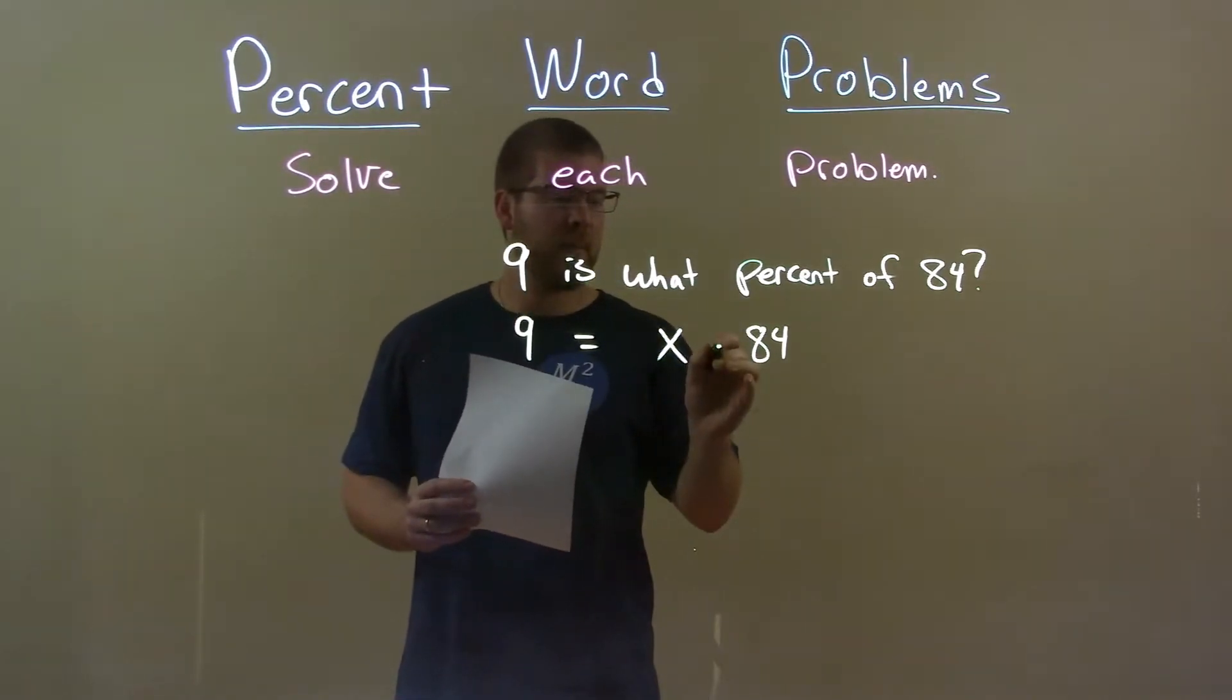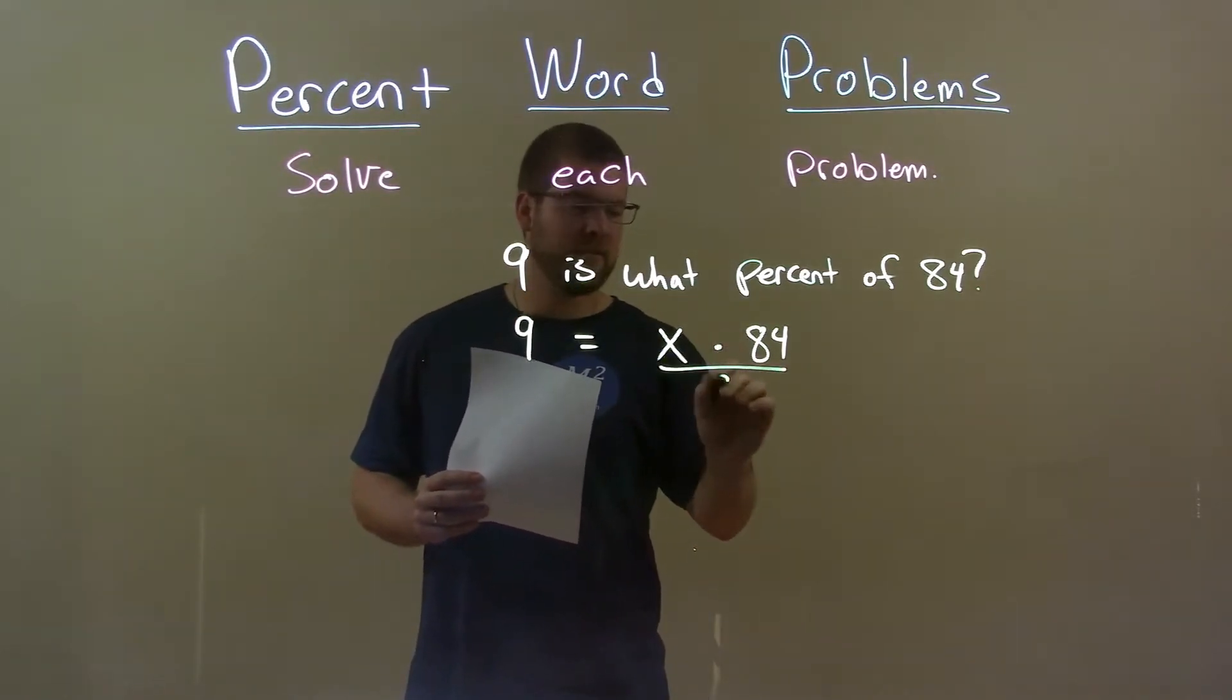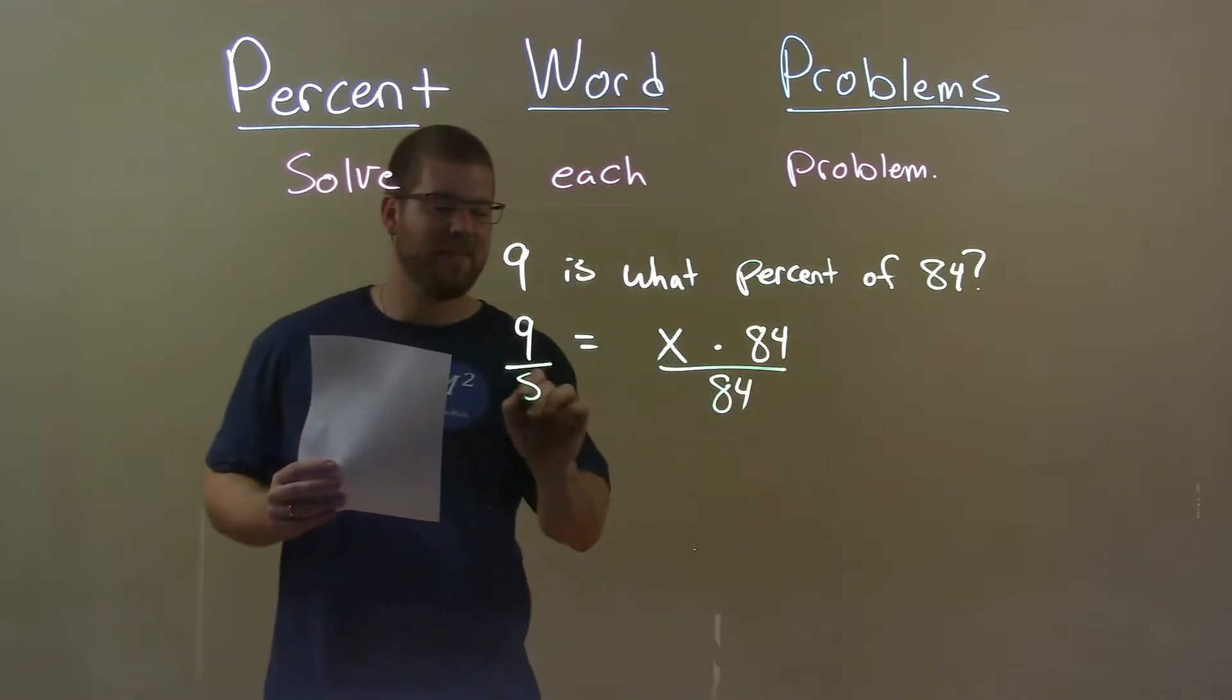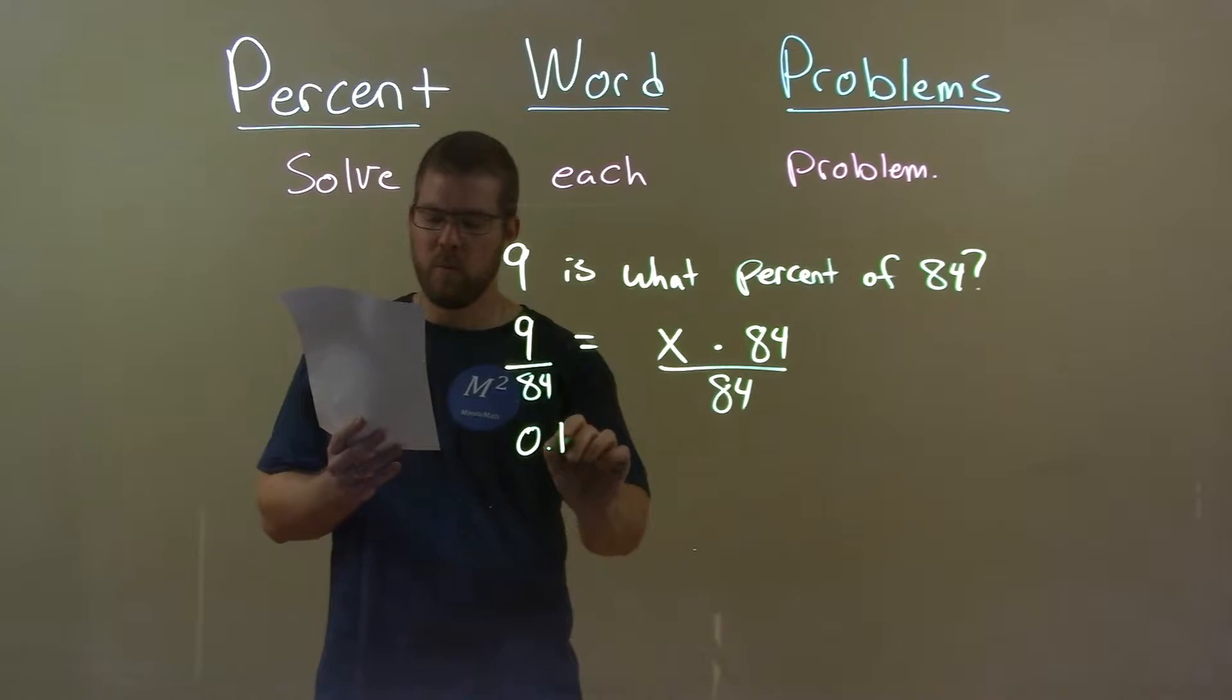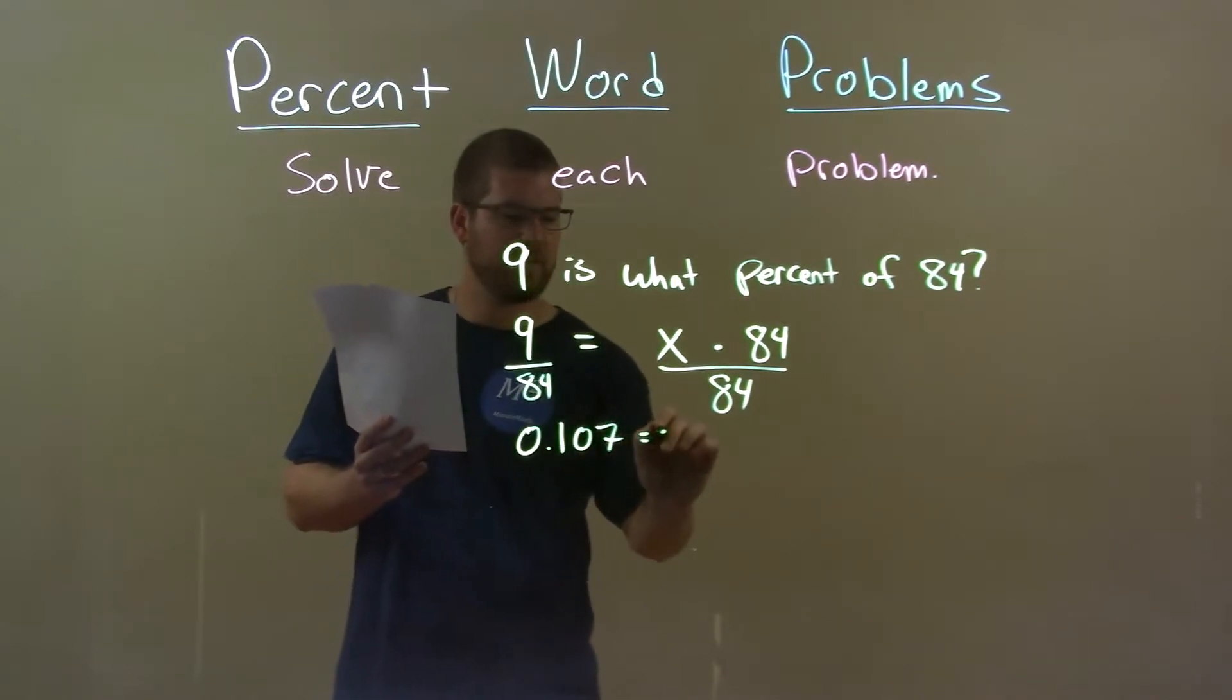Now let's go solve for x. The opposite of multiplication is division, so divide both sides by 84. We get the decimal 0.107 equals x.